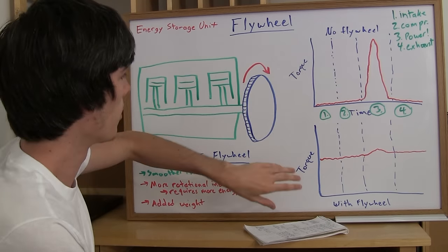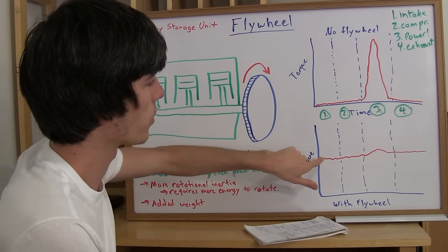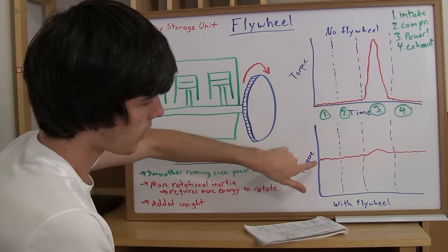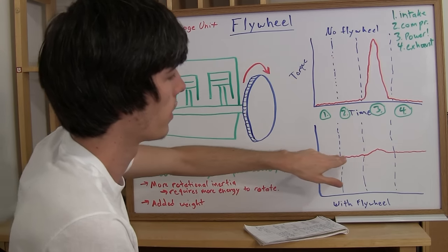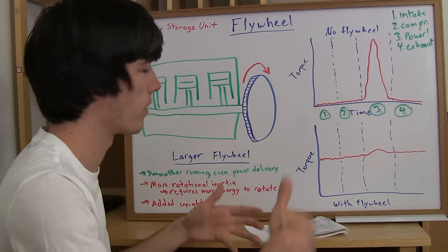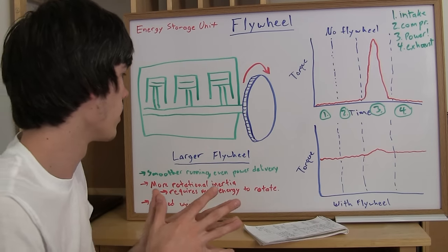Now this is eliminated by adding this flywheel. So your torque is very even, and so even when you're not applying that power stroke, you'll have power distribution because the inertia of the flywheel maintains power.